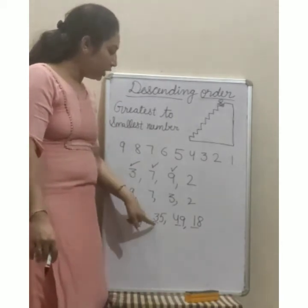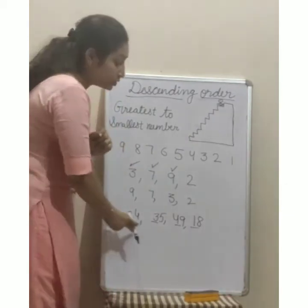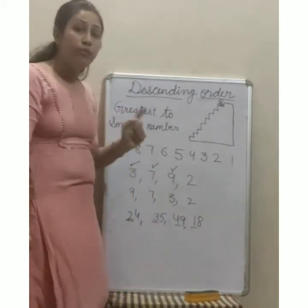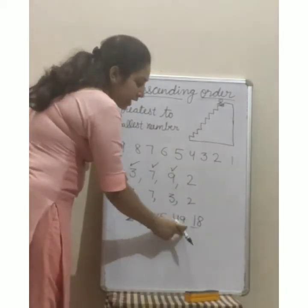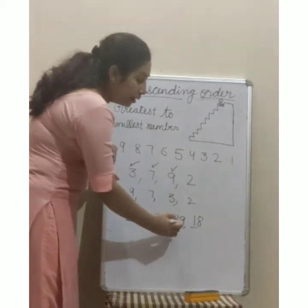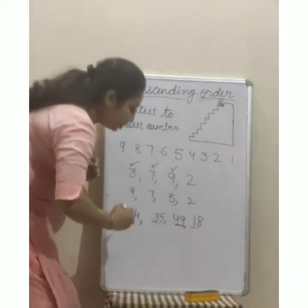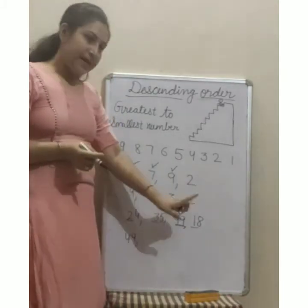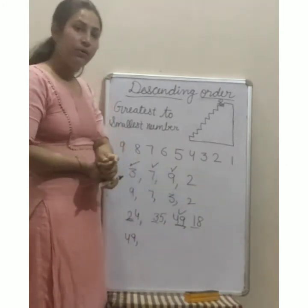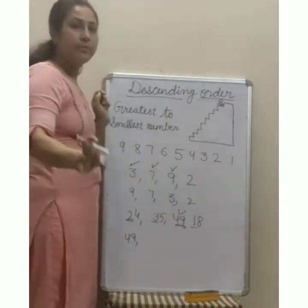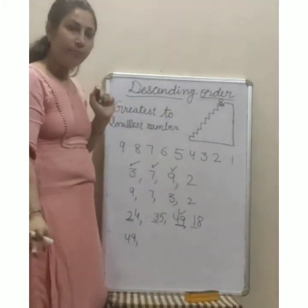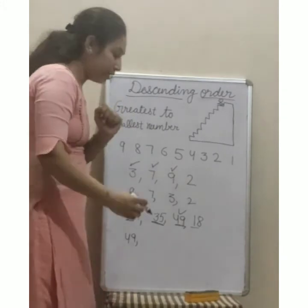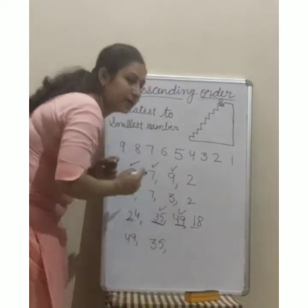Understood? 2, 3, 4, और 1 में से which digit is greater? 4 है। तो आपका first number क्या आएगा? 49। देखो, 4 digit greater है, बट complete number क्या है? 49। तो first number 49 — and put the tick। अब 3 numbers are left: 24, 35 and 18। Which digit is greater? 2, 3 और 1 में से? 3 है, तो complete number क्या है? 35। आपका second number 35 — write here 35 and put the tick sign। Understood?